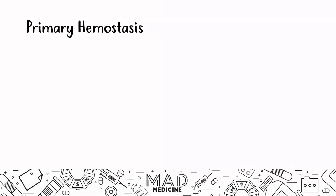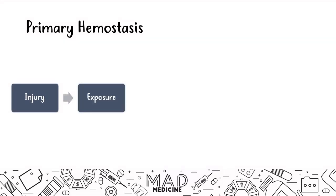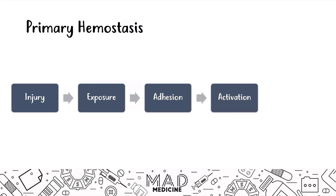When it comes to primary hemostasis, several events must occur. The first event is injury. When there is injury to the blood vessel, you activate the primary hemostasis cascade. After injury, you expose certain factors in the subendothelial layers, and that exposure leads to adhesion of platelets. Once platelets have adhered, that activates them — normally platelets are not activated while floating in the bloodstream. After adhesion, platelet activation leads to aggregation of more and more platelets to form the platelet fibrin plug.